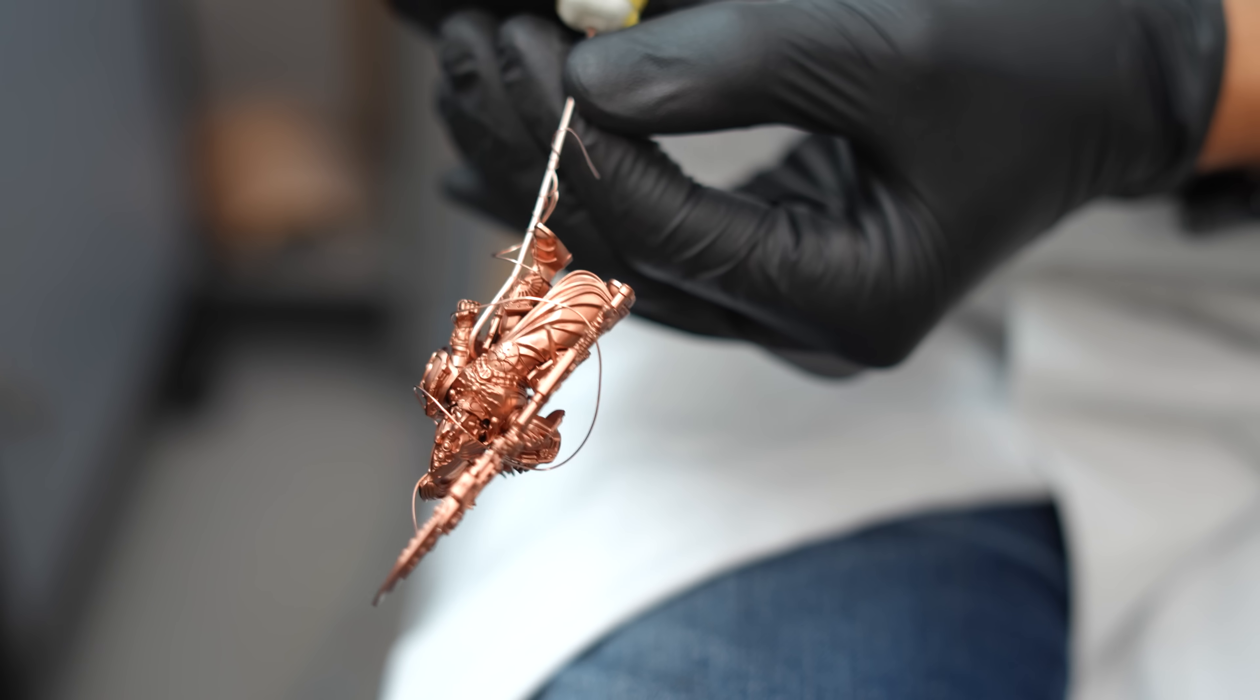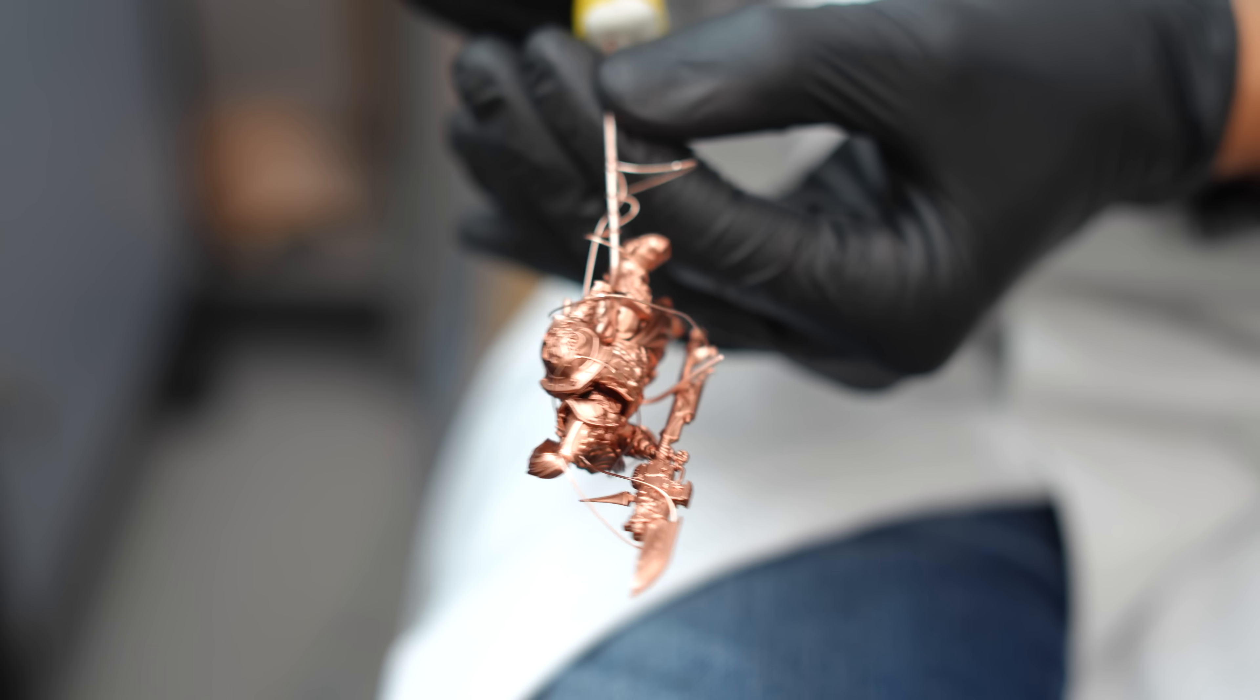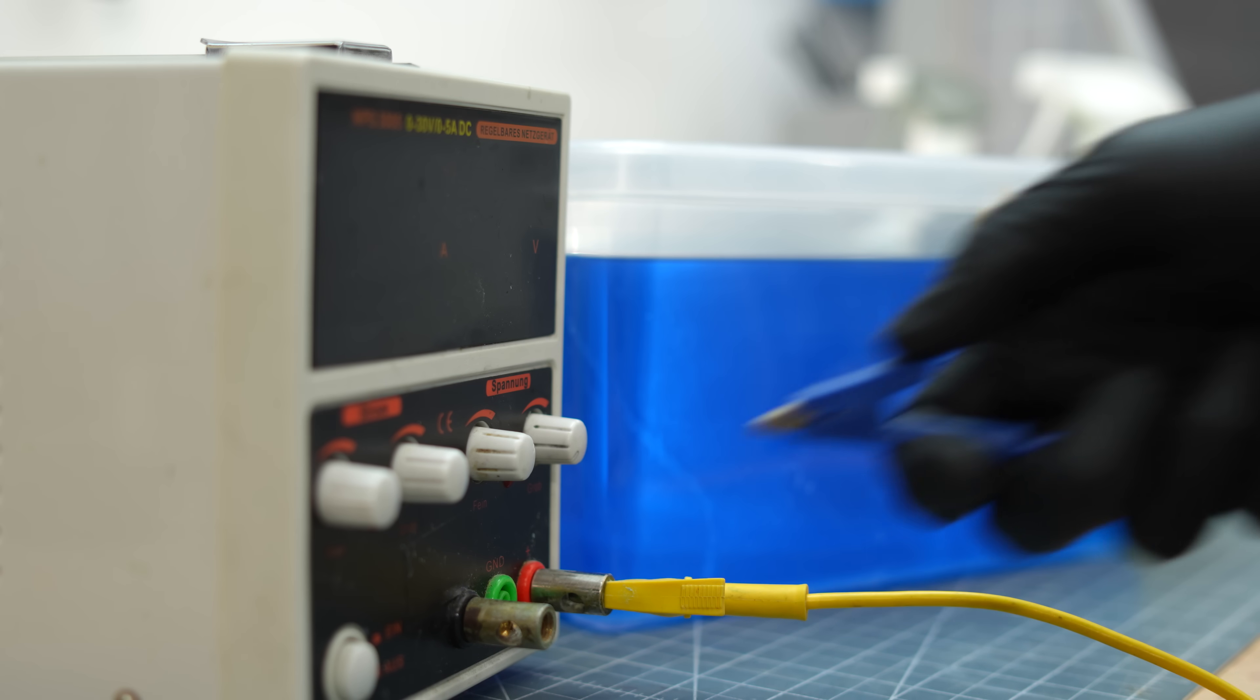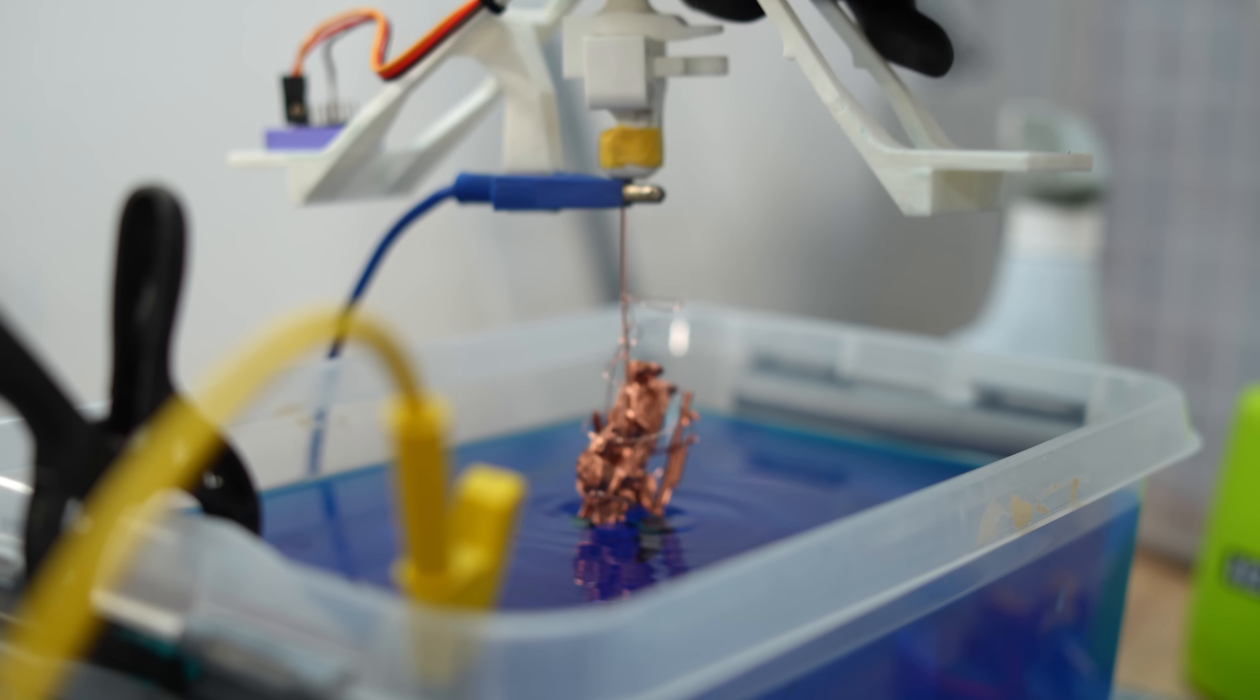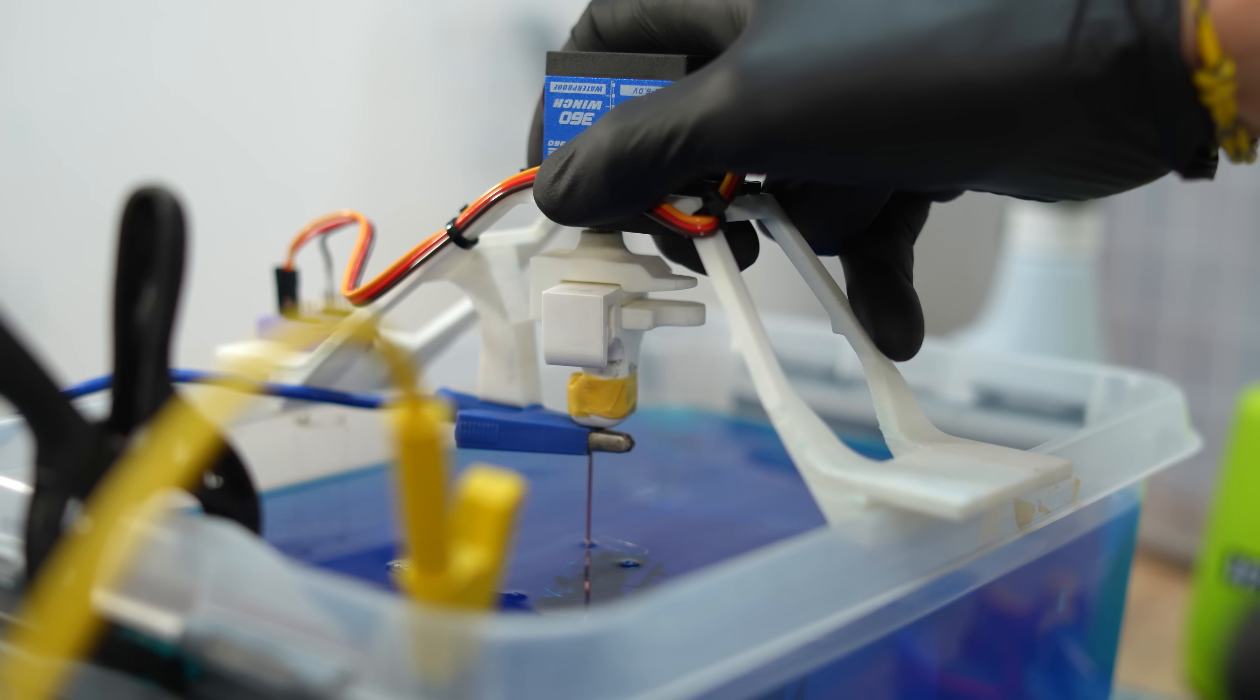Now I attach the thick wire to the miniature and wrap this wire around it so it contacts different spots. I'm careful not to damage the lacquer layer. Then I attach the wire to the negative pole cable and place the whole setup attached to my rotor jig in the electrolyte.